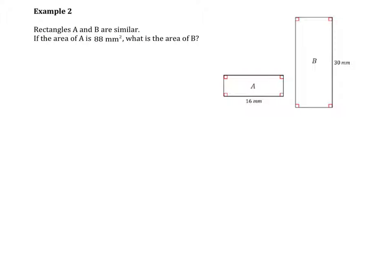Rectangles A and B are similar. If the area of A is 88 square millimeters, what is the area of B? We've got two values, 30 and 16. So the scale factor is 30 over 16. This is approximately equal to 1.875.